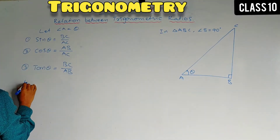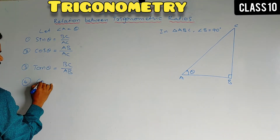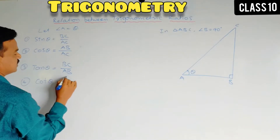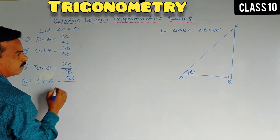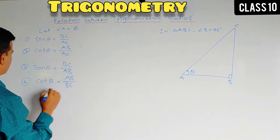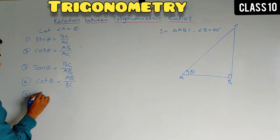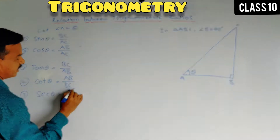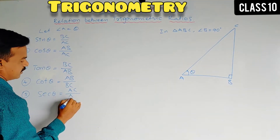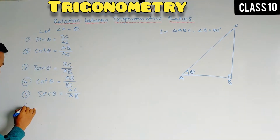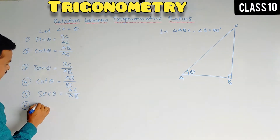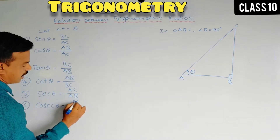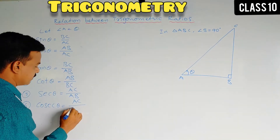Cot theta equals adjacent side by opposite side, that is AB divided by BC. Sec theta equals hypotenuse divided by adjacent side, that is AC by AB. And the sixth one, cosec theta equals hypotenuse divided by opposite side, that is AC by BC.